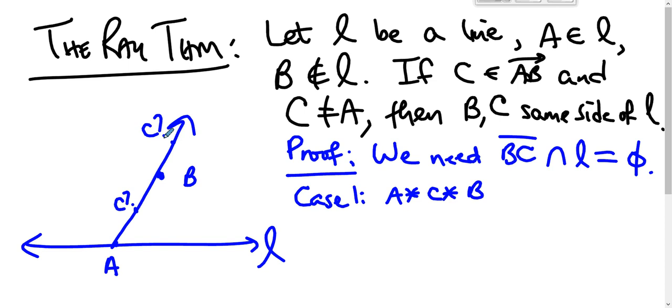Case two will be the case where C is not between A and B, where B is between A and C. If C is on this ray and it's not here, it's either in this area or it's in this area. Obviously if C is B then B and C are on the same side of L, so that's a trivial case. So we'll consider the other two cases.